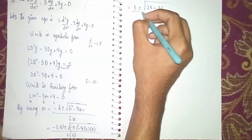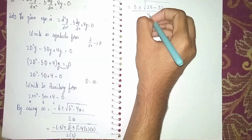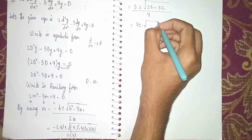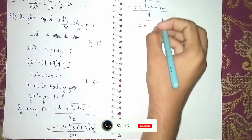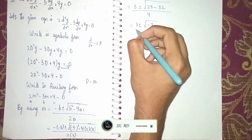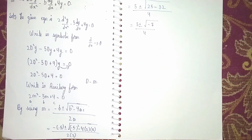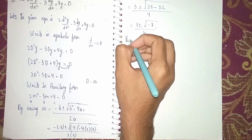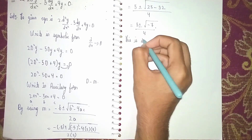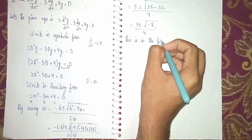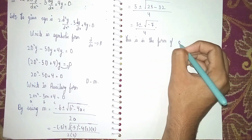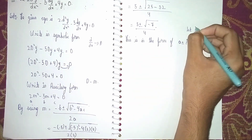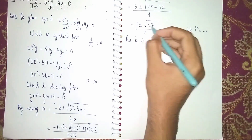That gives 5 plus or minus under root of 25 minus 32, which is minus 7, divided by 4. So we get 5 plus or minus under root of minus 7, all divided by 4. This is in the form a plus or minus ib, where i squared equals minus 1.